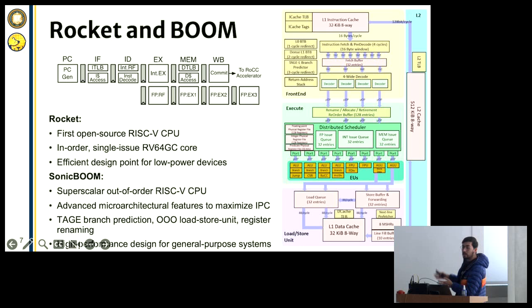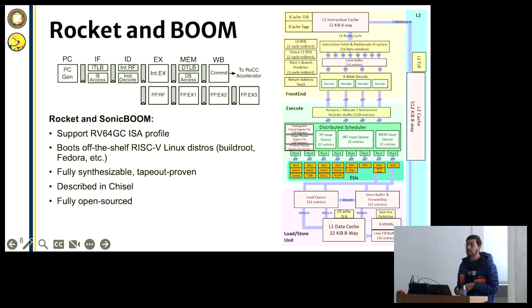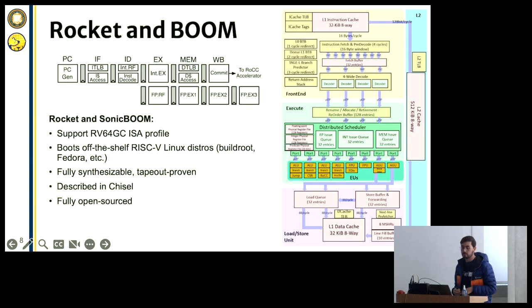There's plenty of documentation online to see each unit in more detail. Boom can be configured in many different ways. Since we're talking about RISC-V, it supports the RV64GC ISA profile, so you can run a lot of off-the-shelf software in Linux and bare-metal tests. We've tested it running Linux boot, databases, and things of that sort. We've taped this out internally at Berkeley, and others have taped out Rocket externally. It's also described in Chisel.